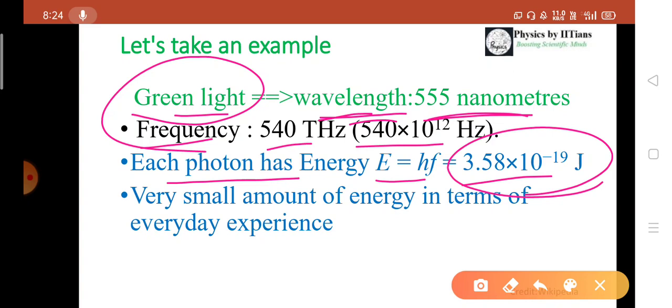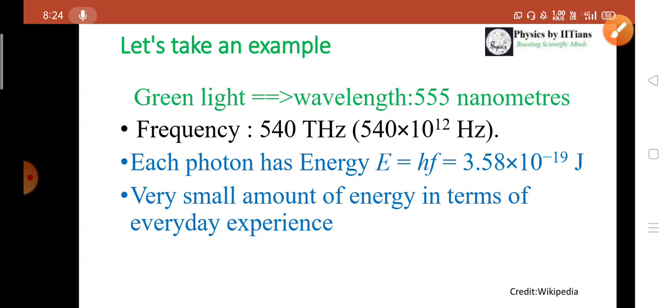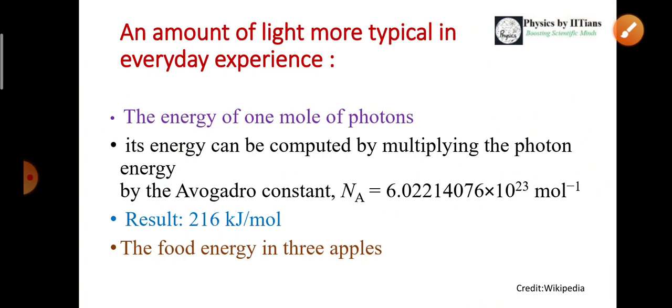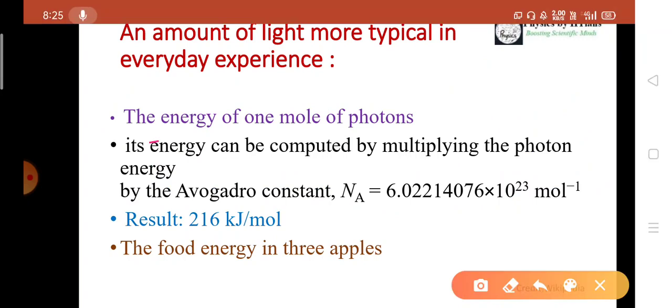This is very small amount of energy. We do not experience 3.58 into 10 to the power minus 19 joule. How much smaller is it? Suppose how much energy we actually experience. An amount of light more typical in everyday experience is the energy of one mole of photons. Its energy can be computed by multiplying the photon energy by the Avogadro number Na, that is 6.02214076 into 10 to the power 23 mole inverse. It results 216 kilojoule per mole.